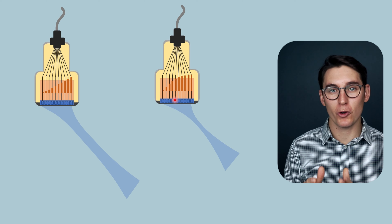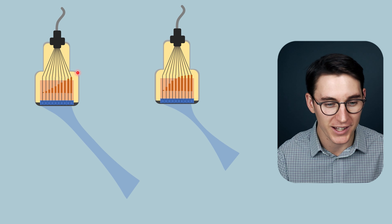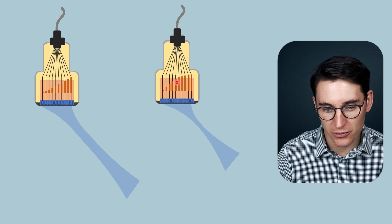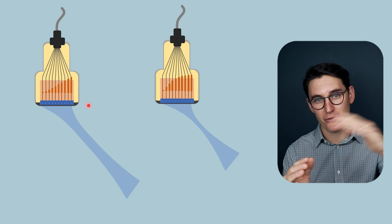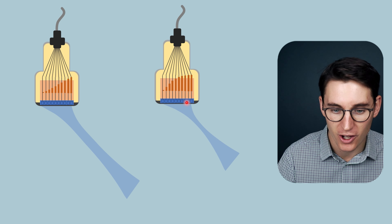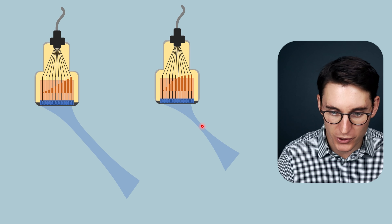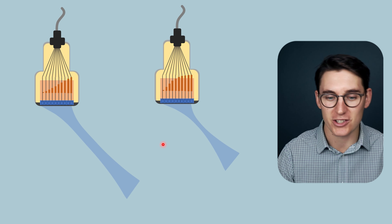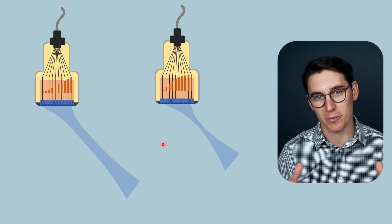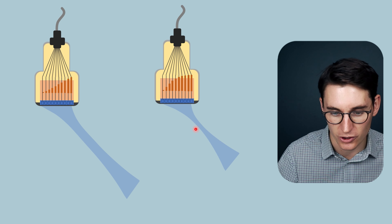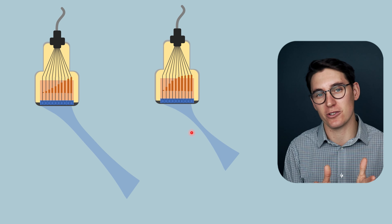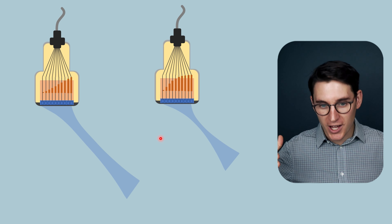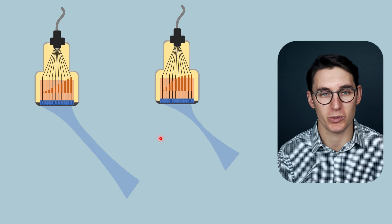Beam steering and beam focusing can also be combined. With the beam steered to one side, adding a further delay in the timing of the transducer elements brings the focal zone closer to the transducer. This not only brings the focal zone closer but also narrows its width, improving lateral resolution. So focusing a beam also provides a resolution benefit — the more we focus it, the better the resolution we achieve.